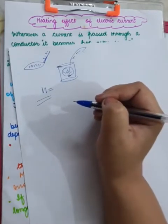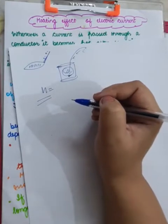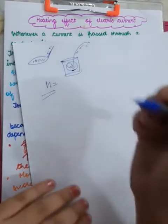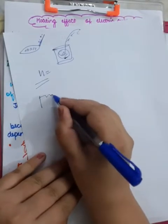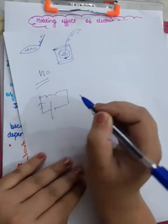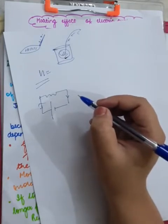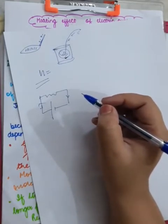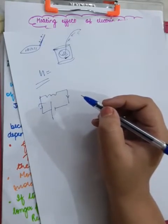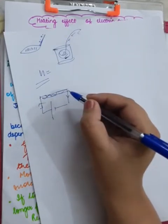Do you have any idea that on what factors heat produced will be dependent? First of all, let me bring to you some of the important facts that whenever a conductor is connected to a battery, the current starts flowing.